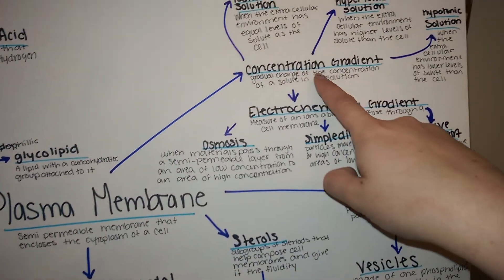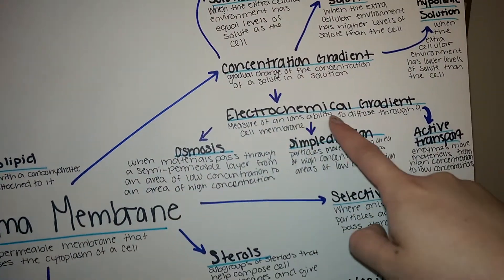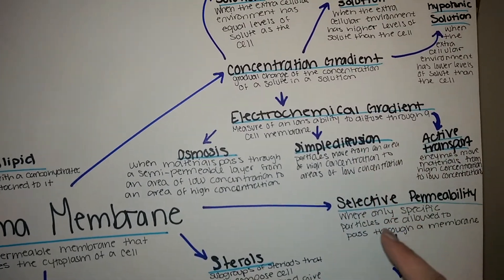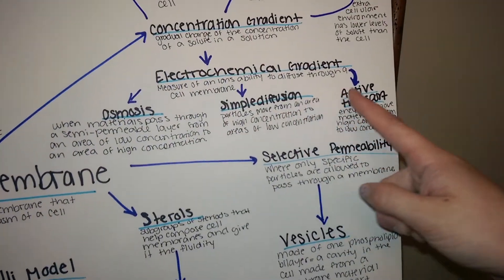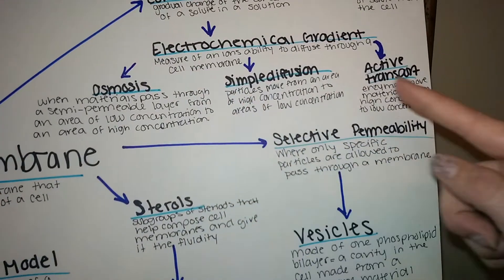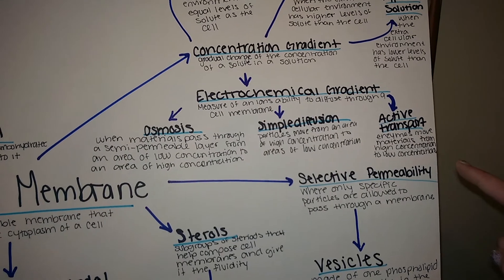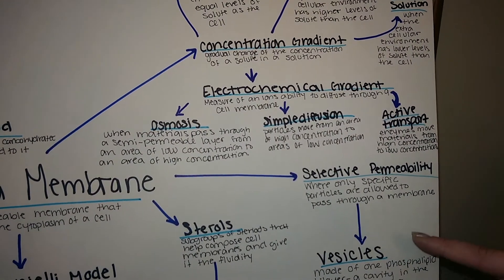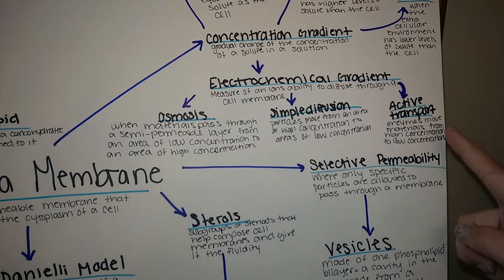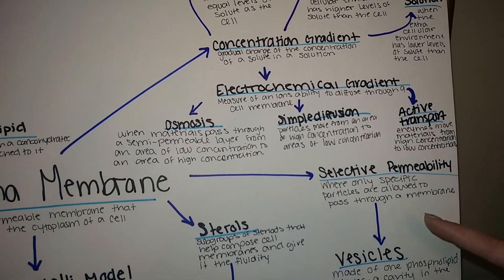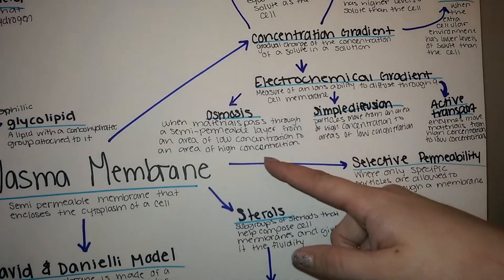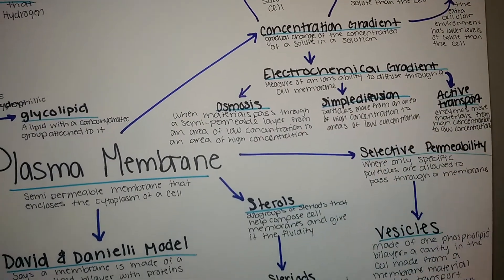From the concentration gradient, we go down to electrochemical gradient, which is the measure of ions' ability to diffuse through a cell membrane. Types of electrochemical gradients include active transport, simple diffusion, and osmosis. Active transport is where enzymes move materials from high concentration to low concentration. Simple diffusion is when particles move from an area of high concentration to low concentration. Osmosis is when materials pass through a semipermeable layer from an area of low concentration to high concentration.